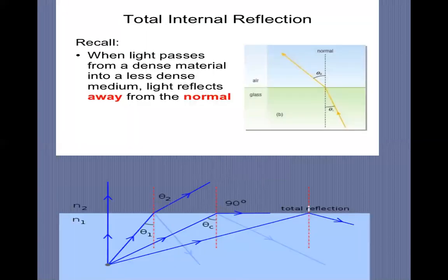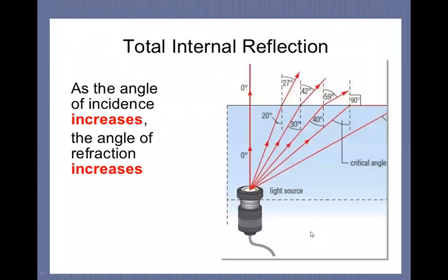Continuing the topic: from glass to air, when a ray enters there will be refraction. As we increase the angle of incidence, the critical angle is reached — that is the angle of incidence in the denser medium for which the angle of refraction becomes 90 degrees. If we increase the angle of incidence beyond this, total internal reflection will occur.